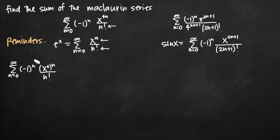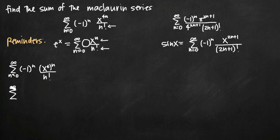Now we need to deal with the negative one to the n out in front, because our well-known series doesn't have that anywhere. What we can do is combine the negative one and the x to the fourth, since these are both raised to the power of n. Since they're raised to the same power, we can multiply them together. So what we'll get is the sum from n equals zero to infinity of negative one times x to the fourth, which is negative x to the fourth, all raised to the n power divided by n factorial.